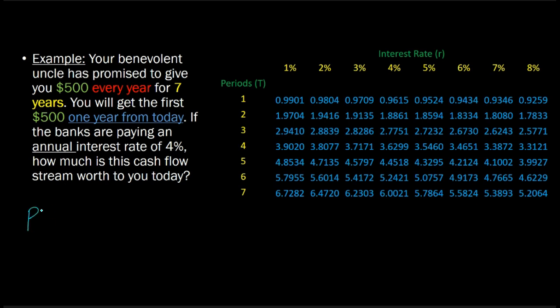The formulaic approach to determining the present value of this annuity is present value equals $500 times 1 minus 1 over 1.04 to the power 7, where 4 is the interest rate and 7 is the number of years the annuity is lasting for, and then divide by 0.04. We have seen that this solves out to about $3,001.02 approximately.